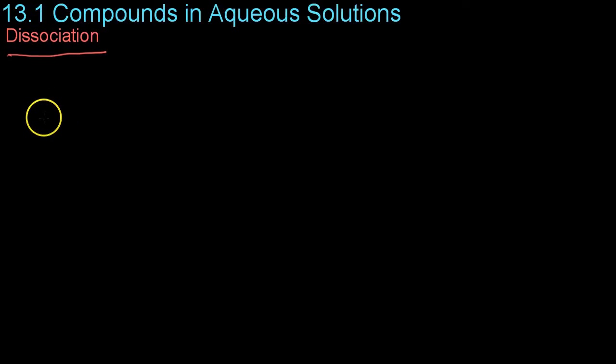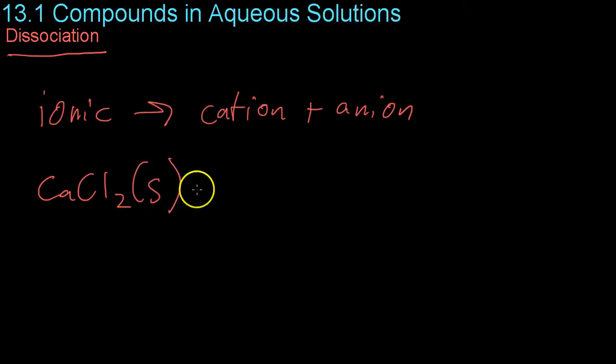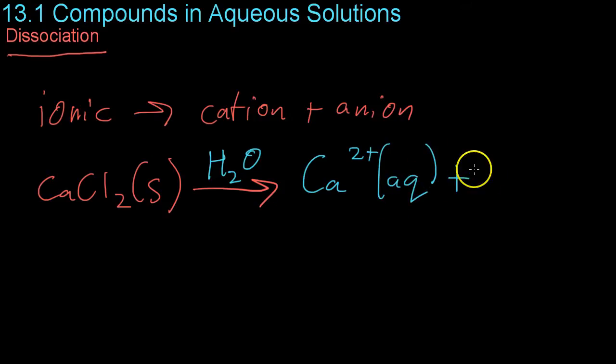Dissociation is a process that ionic compounds undergo when they are dissolved in water. Basically, ionic compounds will separate into their cation and their anion. For example, if we take calcium chloride, which is a solid crystal, and dissolve it into water so that it's in solution, you end up with a calcium 2+ ion. And we use AQ as the symbol for aqueous solution, plus two negative chlorine ions, which are aqueous.